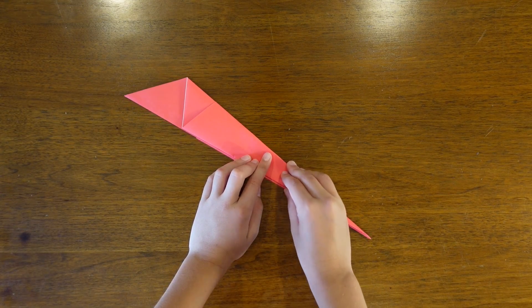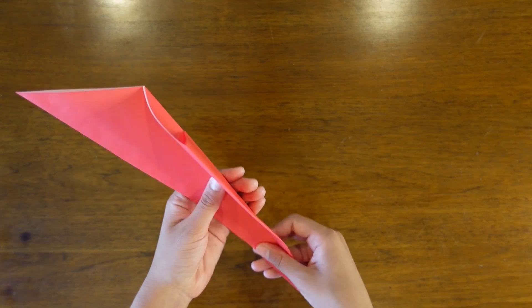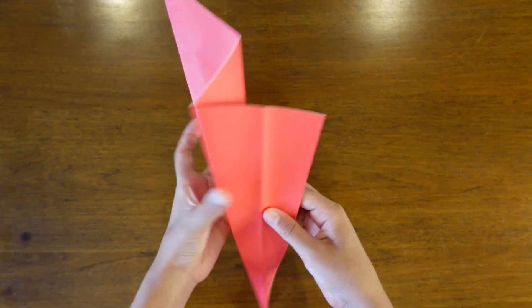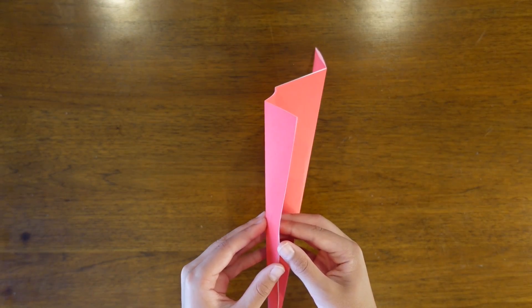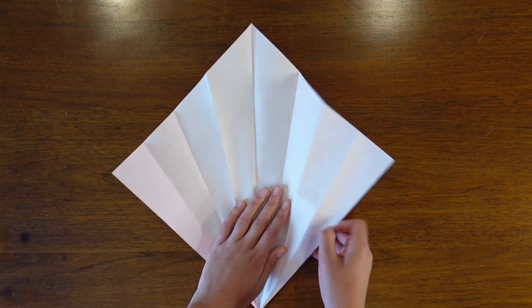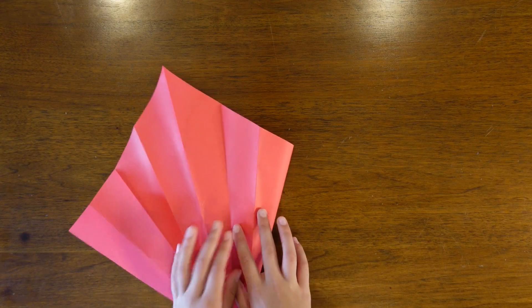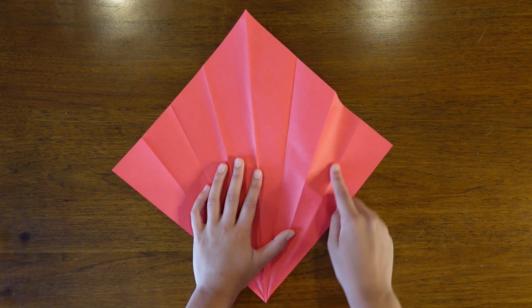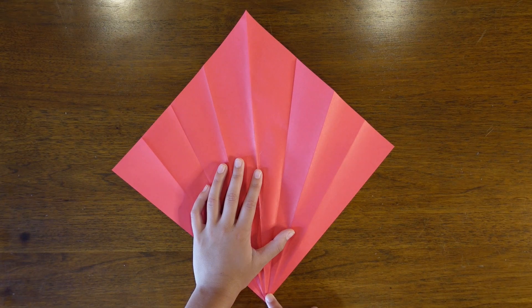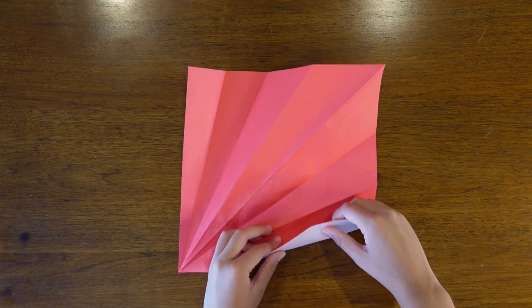Once you do that, you're going to unfold the entire thing. Now we're going to have it colored side up. For me, it's red. And then we're going to fold on the first crease on both sides.